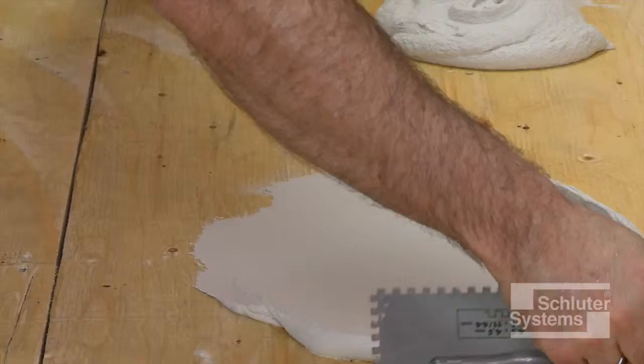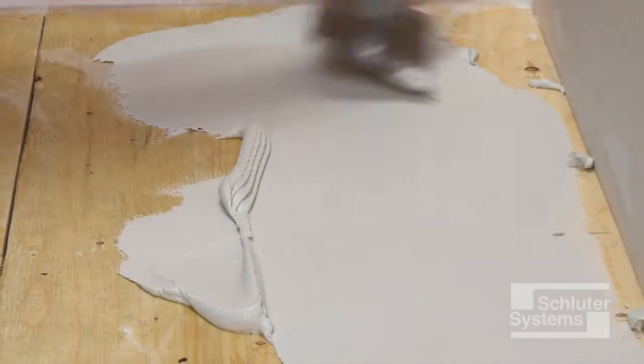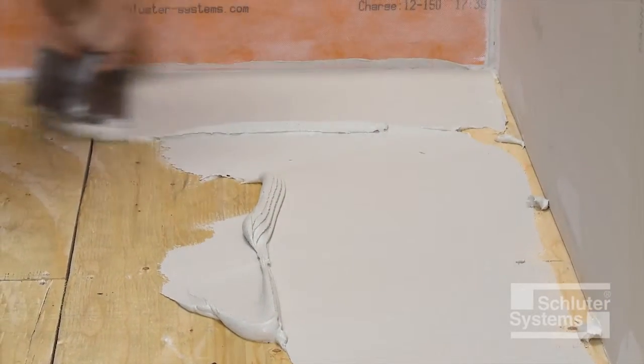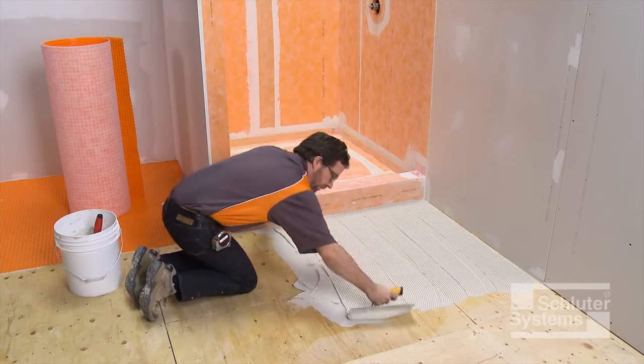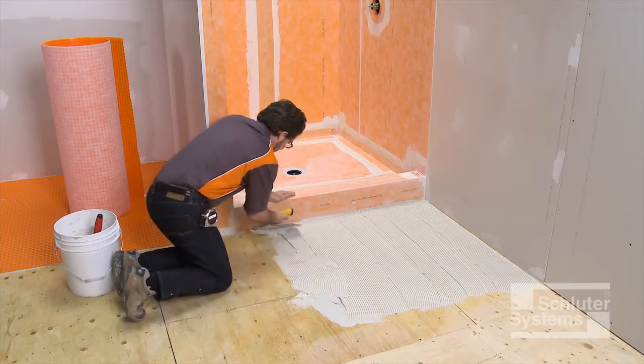Apply a thin layer of the mortar with the flat side of the trowel to produce solid contact with the surface, and then comb additional mortar using the notched side of the trowel.